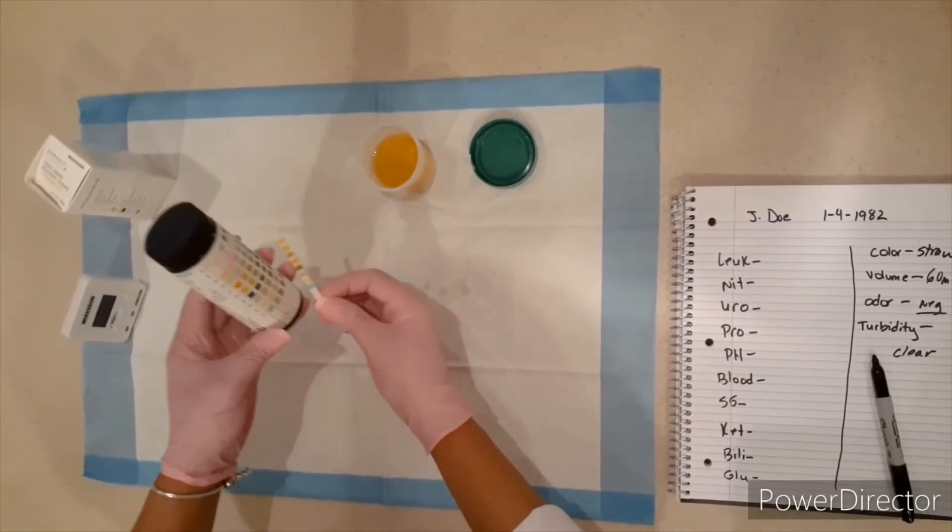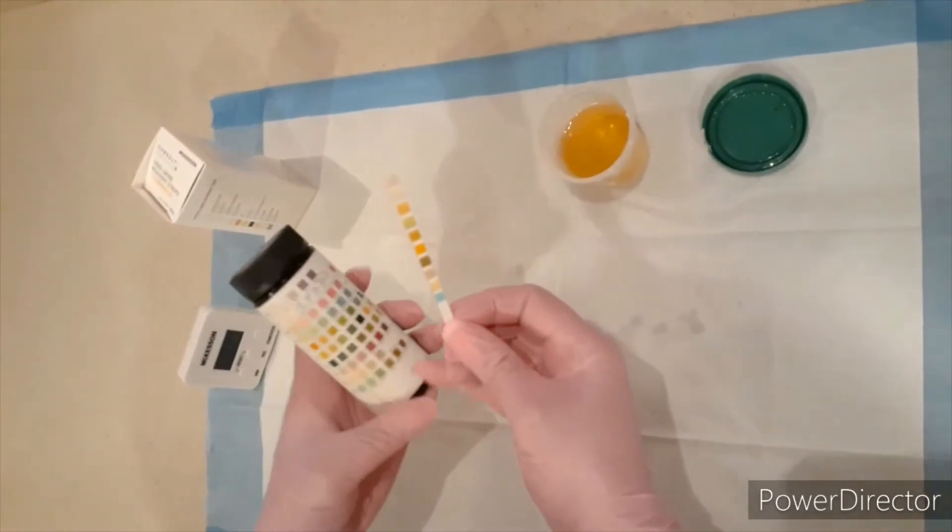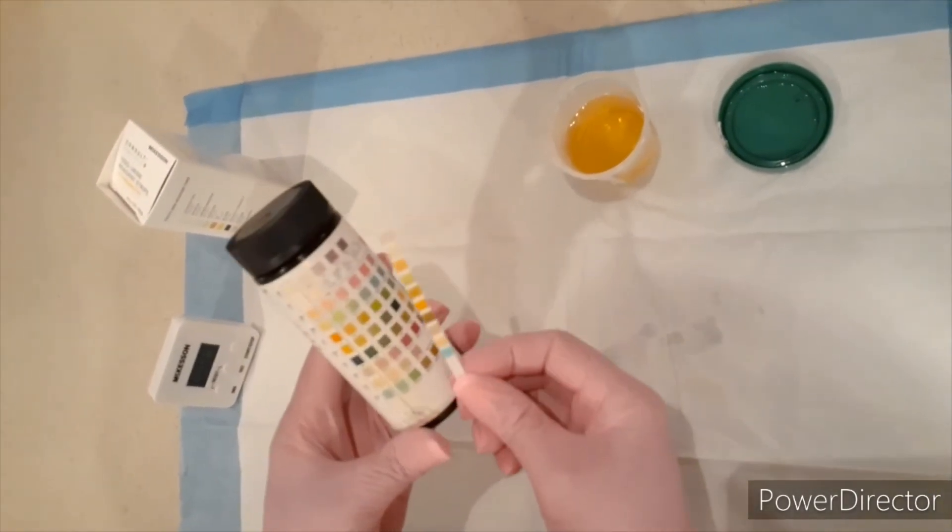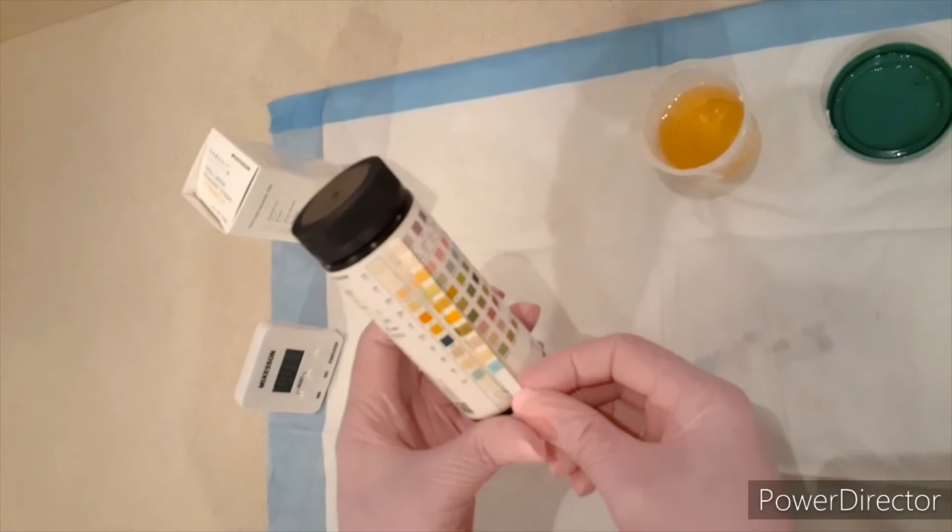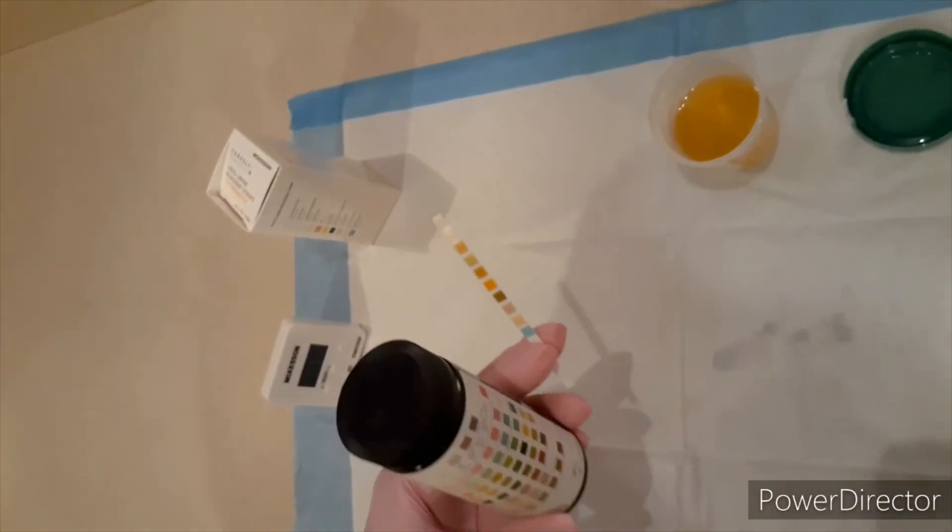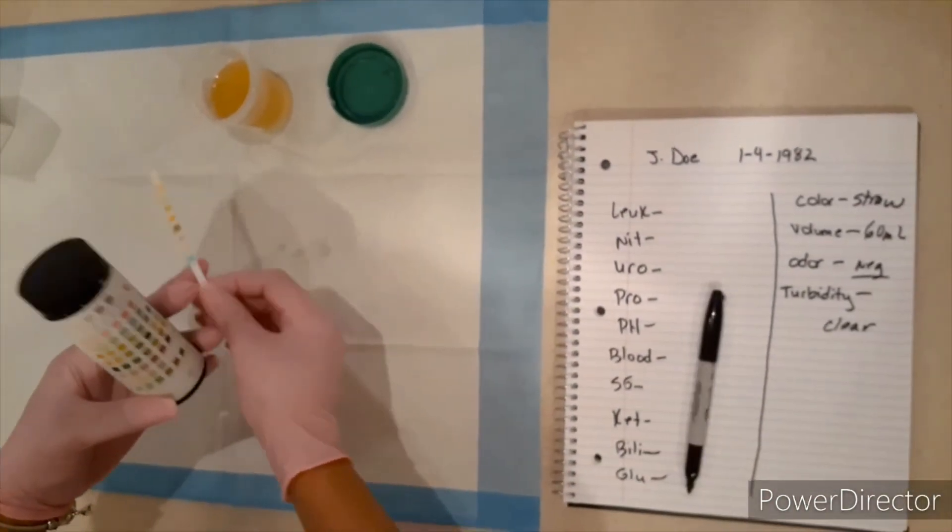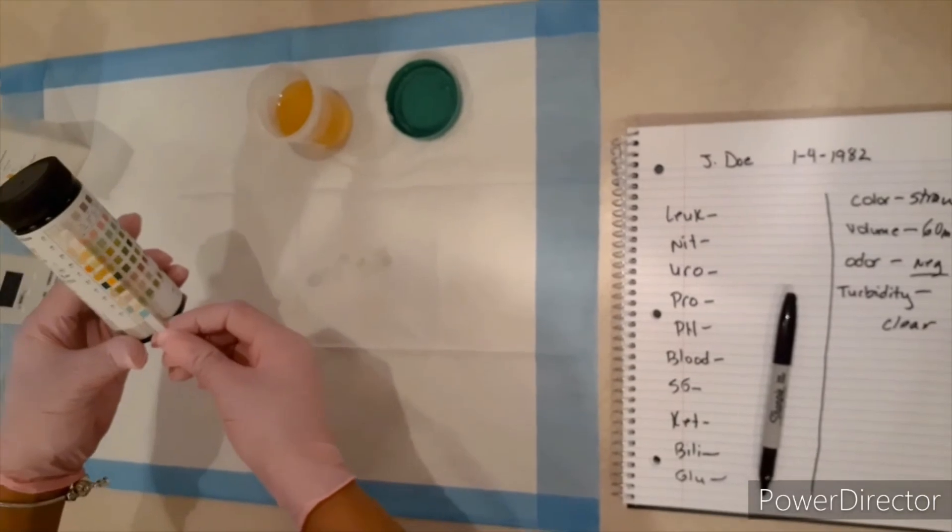So I'm going to just hold the strip up to the bottle and compare how these colors change compared to these colors in our bottle. So we're at 30 seconds. It looks like our glucose here at the bottom is negative and our bilirubin is also negative. So I got to make sure that I'm at right now 40 seconds and I'm going to check my ketones.